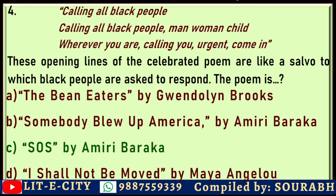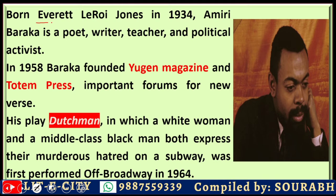Amiri Baraka's birth name was Everett LeRoy Jones. He is a poet, writer, teacher, and political activist. He founded in 1961 Yugen Magazine and Totem Press — important forums for new words. His play Dutchman, in which a white woman and a middle-class black man both express their murderous hatred on a subway, was first performed Off-Broadway in 1964. These are important works that championed the Black Arts Movement.